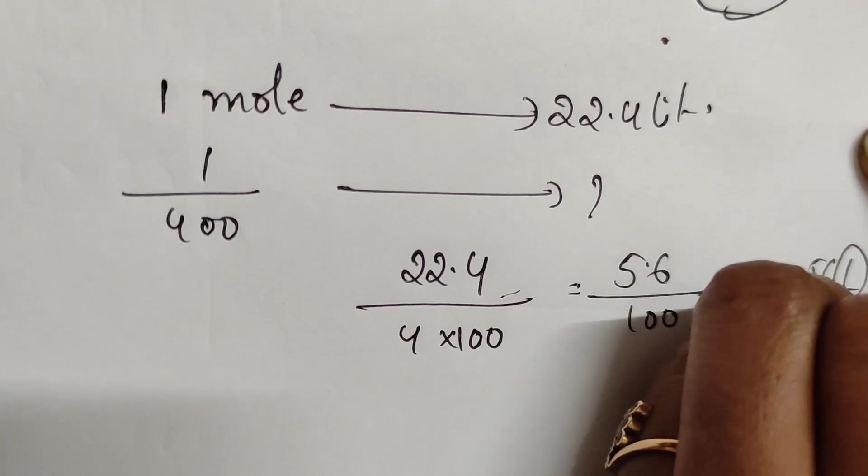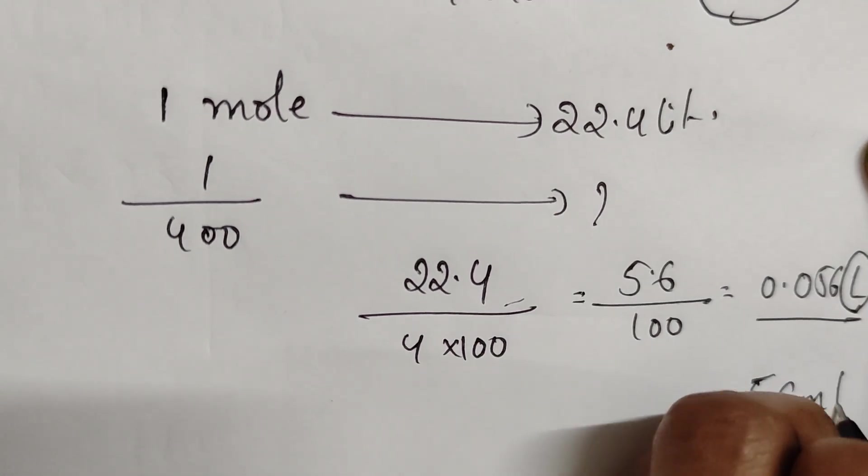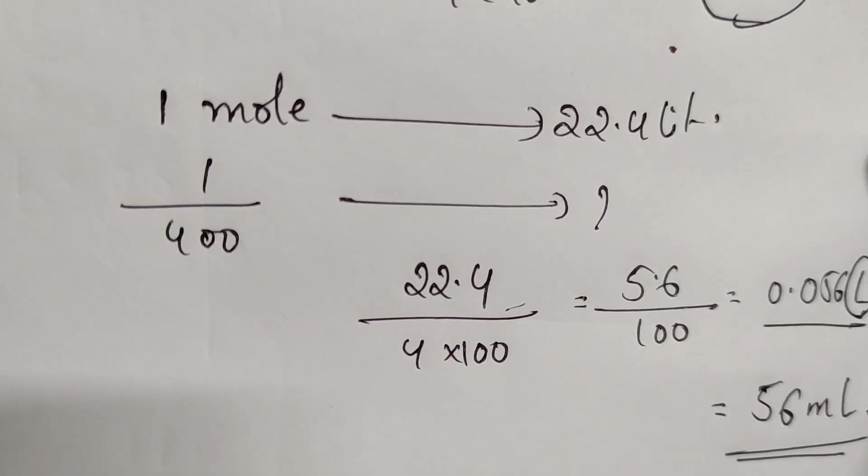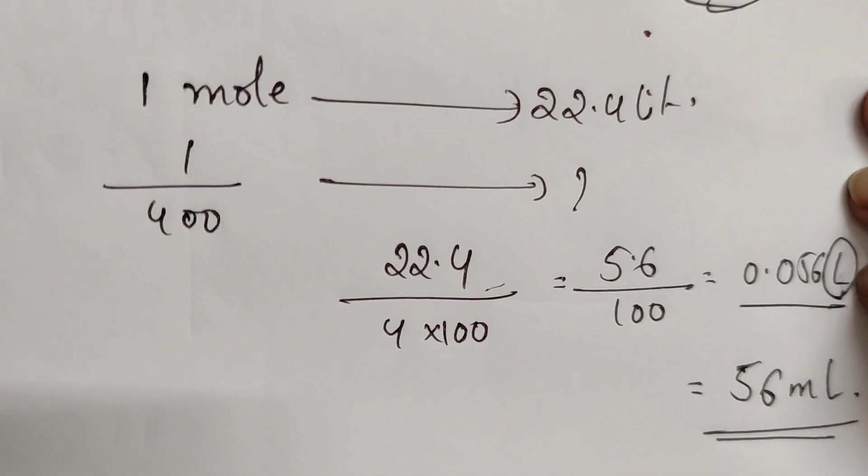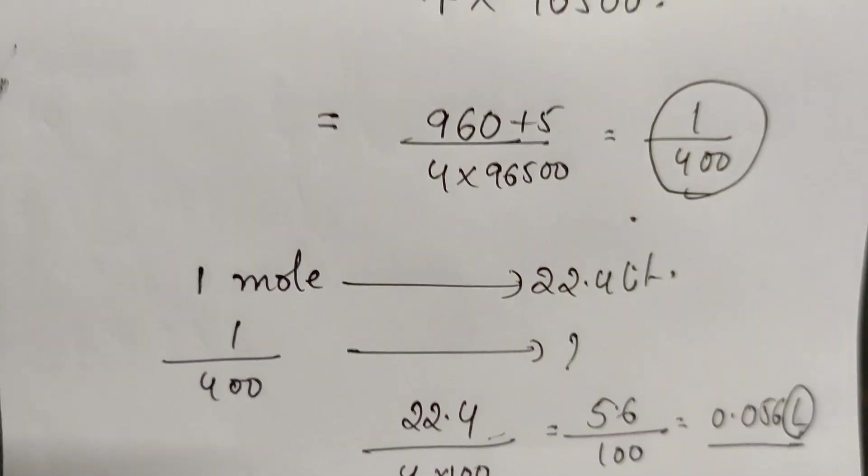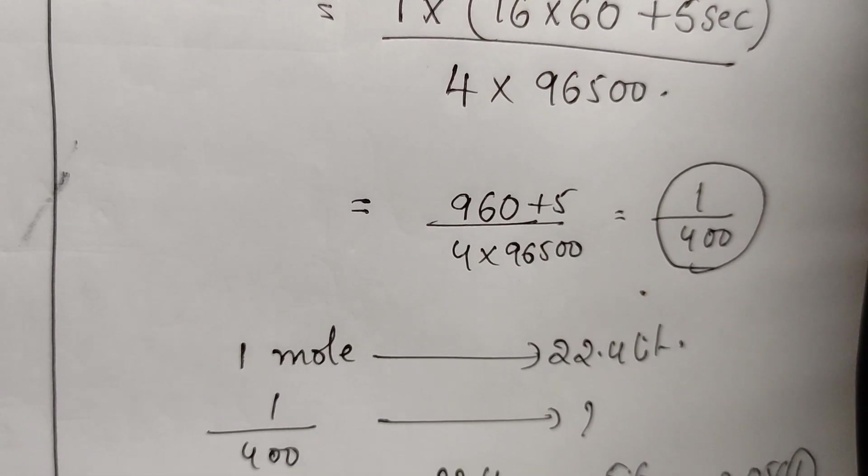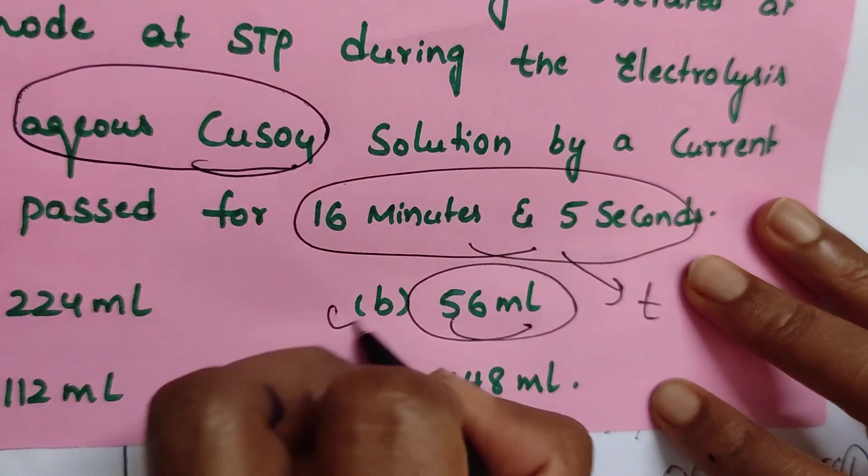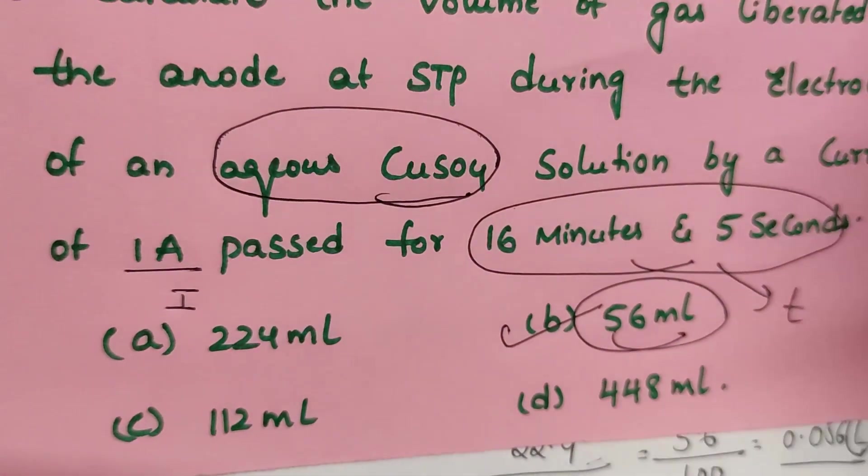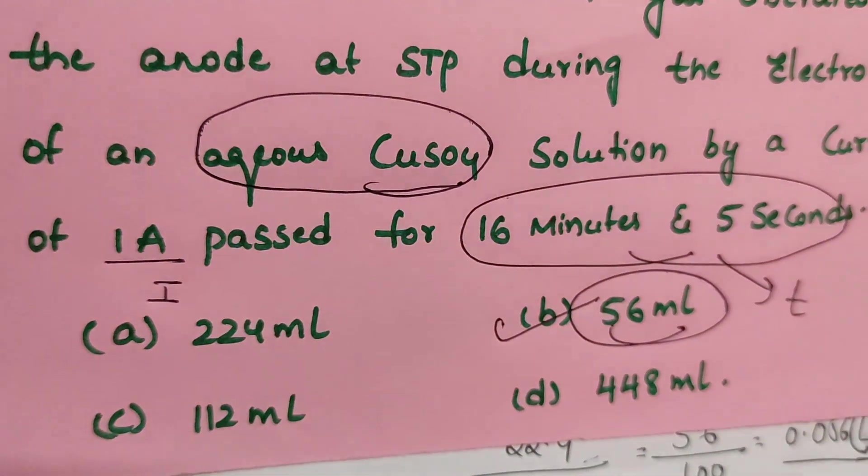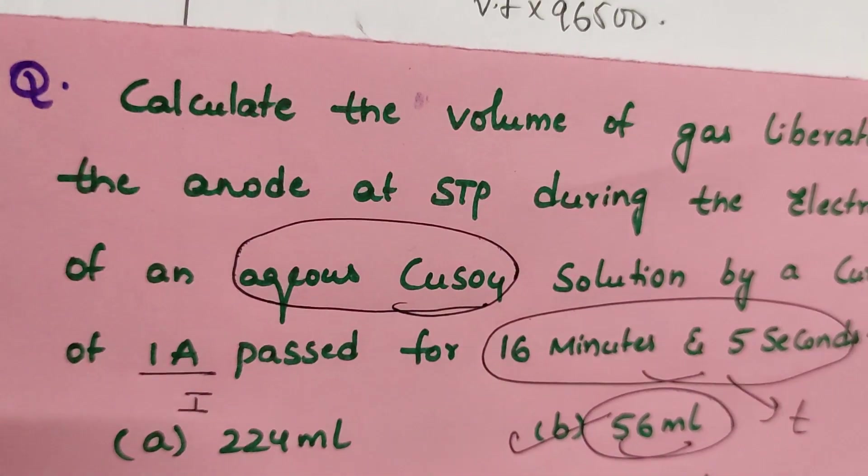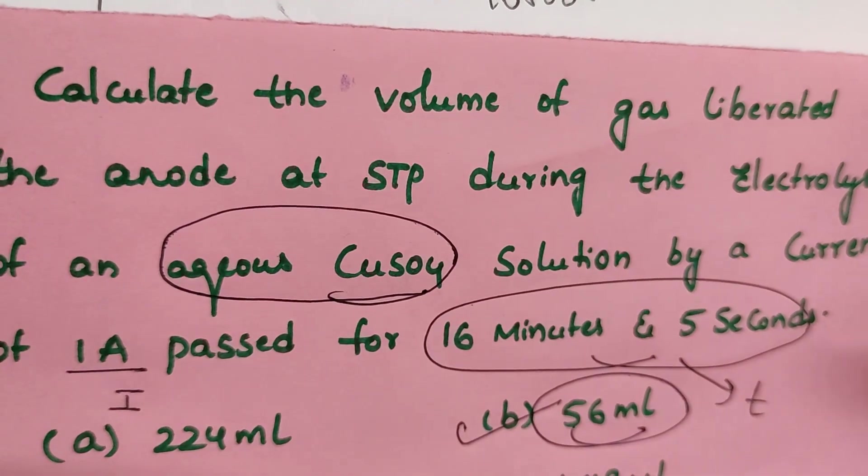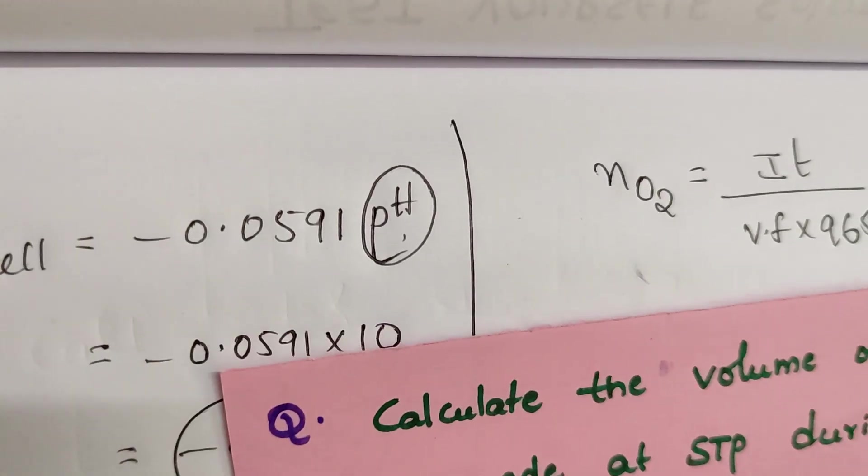Options they give in milliliters, so convert this into milliliters. One liter is 1000 mL. If you multiply with 1000, you'll be getting 56 milliliters as our correct answer. Let's check that: 56 milliliters is the correct answer, option B. These are the solutions to the test yourself questions which I asked in the previous video.